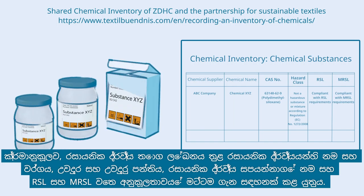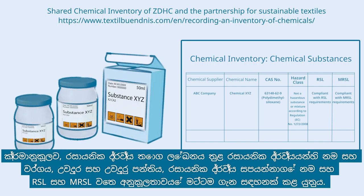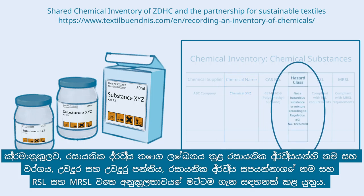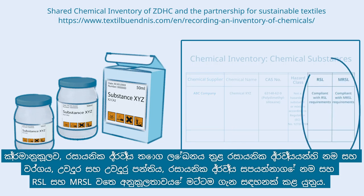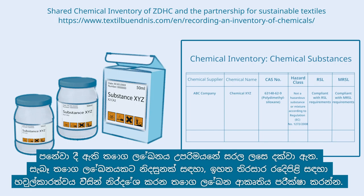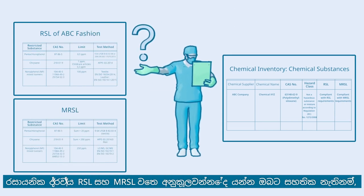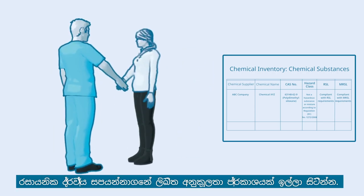Typically, the chemical inventory should indicate the name and type of chemical substance, the hazard and hazard class, the name of the chemical supplier, and the level of conformance to RSL and MRSL. The shown inventory is strongly simplified. For an example of an actual inventory, check the inventory format recommended by the Partnership for Sustainable Textiles. If you are unsure whether the chemicals conform to RSL and MRSL, request a written conformity declaration from the chemical supplier.